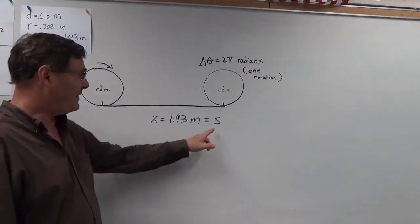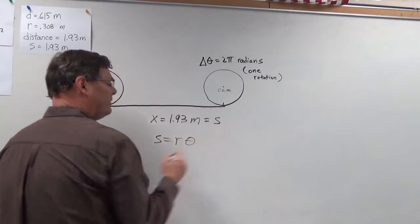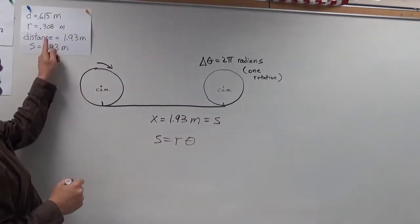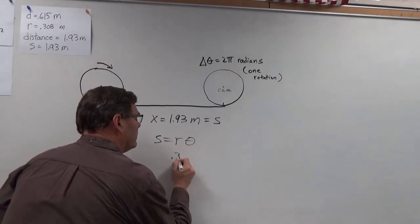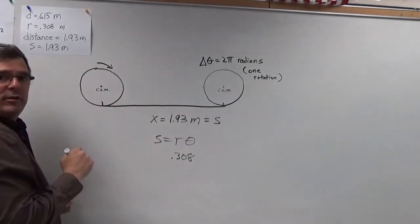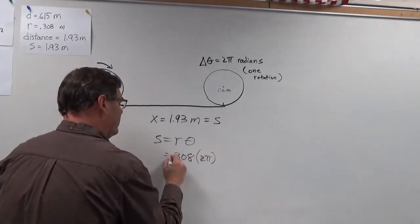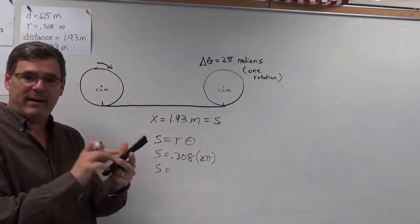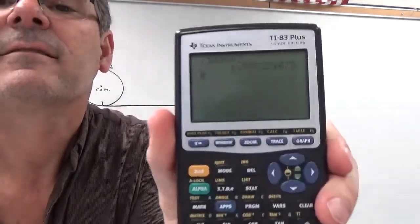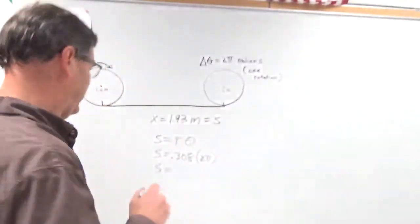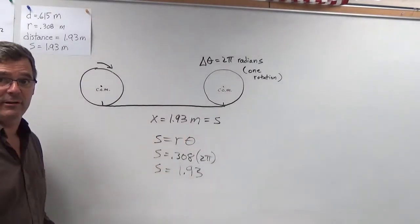We can double-check that the arc length S equals the distance traveled using S equals R times theta. The radius of the bike tire was measured to be 0.308 meters, and the angle the wheel rolls through in one rotation is 2π. Punching it into the calculator gives 1.93 meters, which matches the linear distance I measured. So it checks.